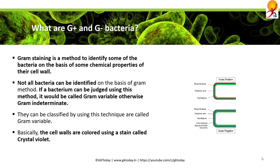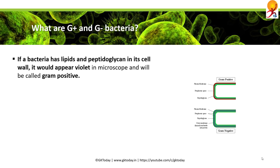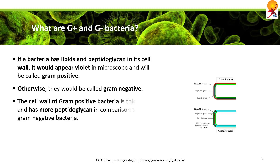The cell walls are colored using a stain called crystal violet. If the bacteria has lipids and peptidoglycan, its cell wall would appear violet under the microscope and they will be called gram positive. Otherwise, they will be called gram negative. The cell wall of gram positive bacteria is thicker because it has more peptidoglycan in comparison to gram negative bacteria.